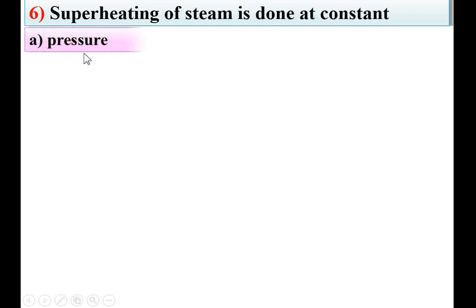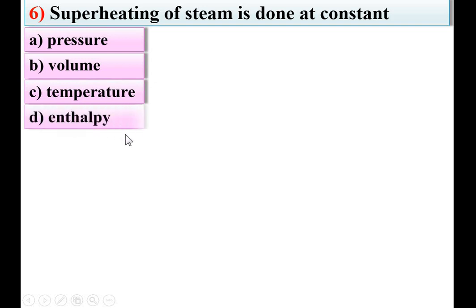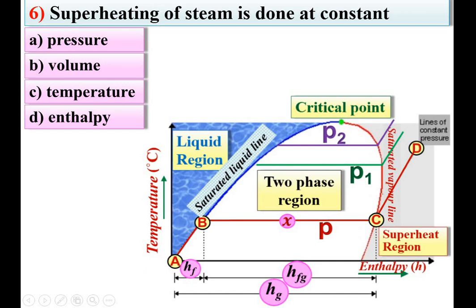Next: superheating of steam is done at constant option pressure, volume, temperature, or enthalpy. Consider this figure. Superheating of steam is actually at constant pressure. The red, green, and purple colored lines are all constant pressure lines but at different pressures. The superheating portion from C to D is at constant pressure. So A is the right answer.